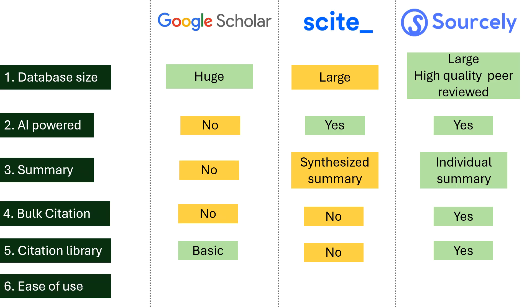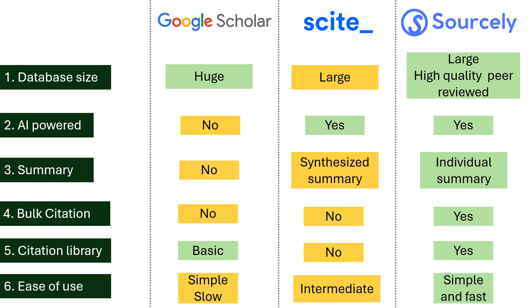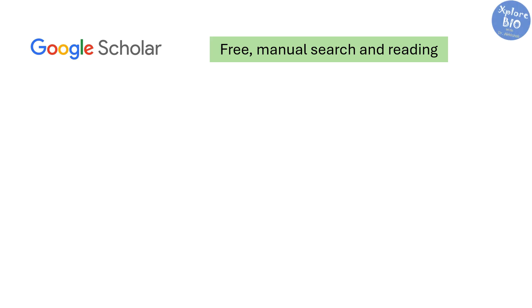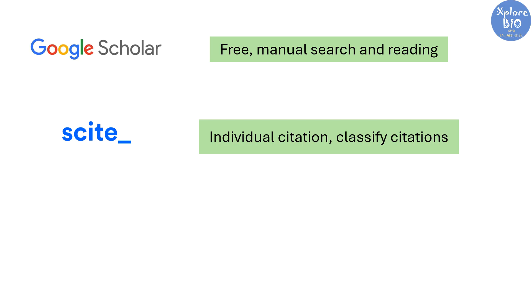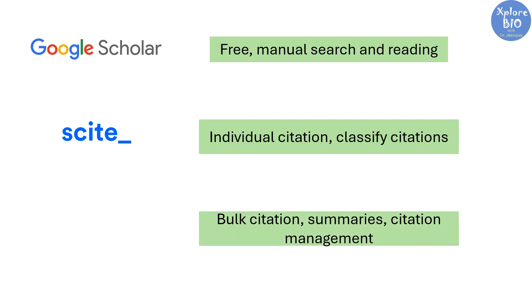Considering ease of use, Sourcely is very user-friendly — most tasks take just a single click. Google Scholar is familiar but not efficient, since you need to repeat searches many times. Cite AI requires a bit of a learning curve, but its ability to classify citations as supporting, contradictory, or mentioning is very helpful. To sum up: use Google Scholar if you want a free tool and don't mind manual searches. Use Cite AI if your purpose is to explore papers around a specific statement or question with smart citation classification. And if you want bulk, highly relevant citations with a single click, along with summaries and library management, then Sourcely is definitely the best option.